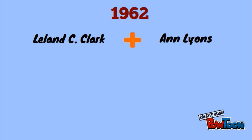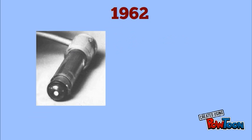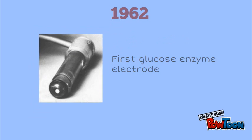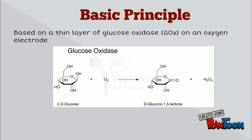The history of biosensors began in 1962, when Clark and Anne Young from Cincinnati Children's Hospital developed the first glucose enzyme electrode. The basic principle of this biosensor was based on a thin layer of glucose oxidase on an oxygen electrode. Thus, the readout was the amount of oxygen consumed by glucose oxidase during the enzymatic reaction with the substrate glucose.